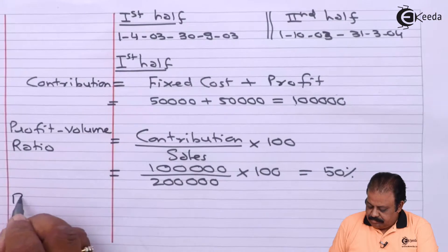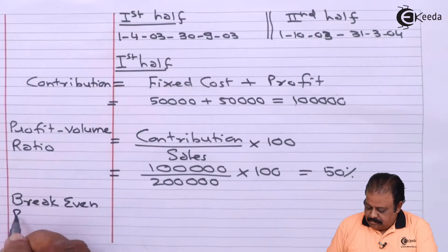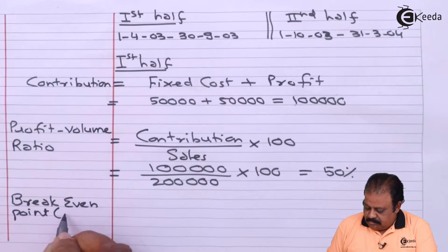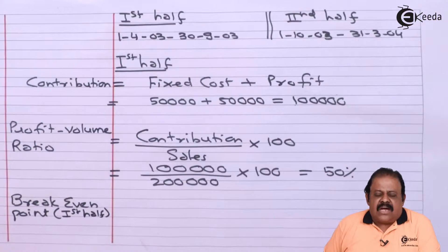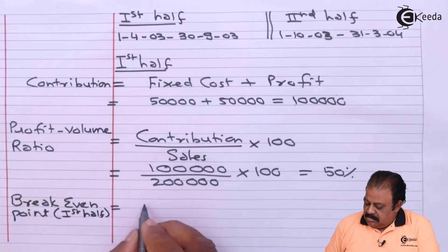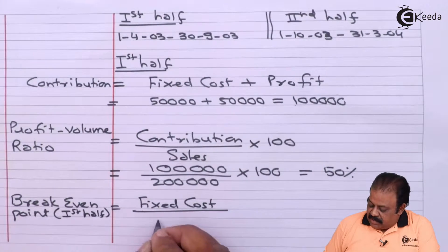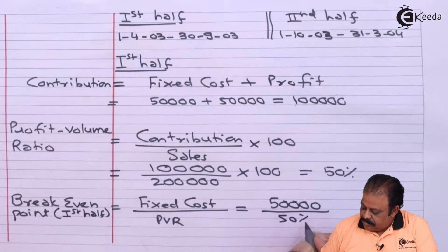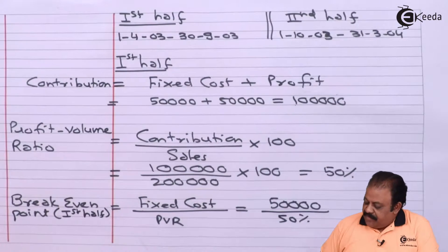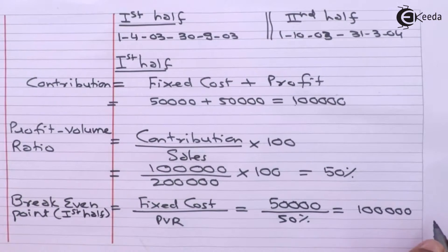Now we calculate break-even point for the first half. The formula is fixed cost divided by PV ratio. Fixed cost is fifty thousand divided by 50%, so break-even point for the first half is rupees one lakh.